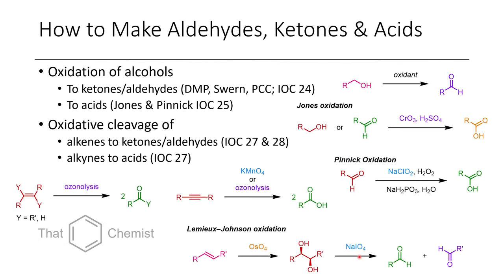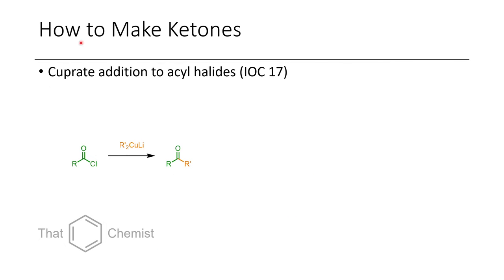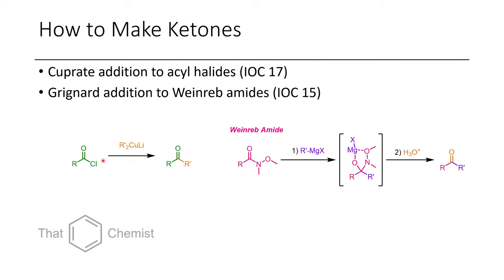If we wanted to make ketones, aside from oxidative cleavage of alkenes, you could add a cuprate to an acyl halide. Additionally, you could add a Grignard reagent to a Weinreb amide — this is stable at low temperatures and upon hydrolysis affords the ketone. This is one way to get around over-addition.